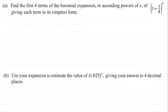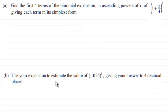In this question it's all about the binomial expansion. What we've got to do is find the first four terms of the binomial expansion in ascending powers of x of (1 + x/4) to the power 8, giving each term in its simplest form. Then we've got to use the expansion to estimate the value of 1.025 to the power 8, giving our answer to four decimal places.